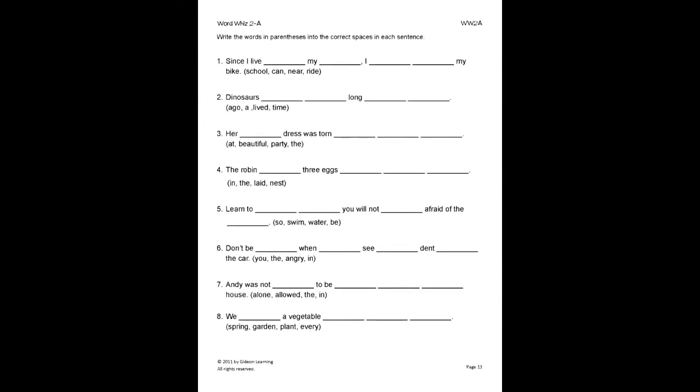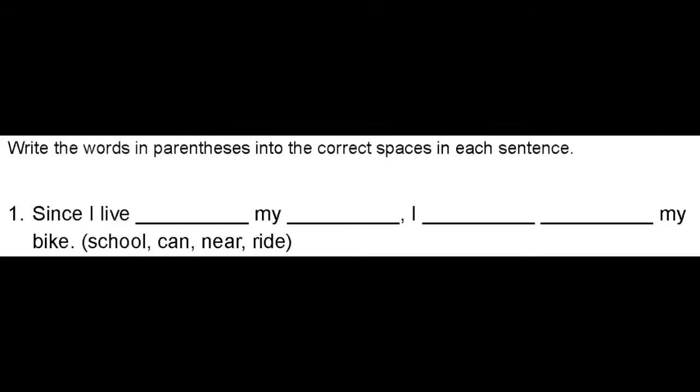Here, the student will write the words in the parentheses into the correct spaces in each sentence. Let's look at number 1 for example. Since I live blank my blank, I blank blank my bike. So we look at the words given in parentheses and form a complete sentence by neatly writing the words in the correct blanks. Since I live near my school, I can ride my bike.